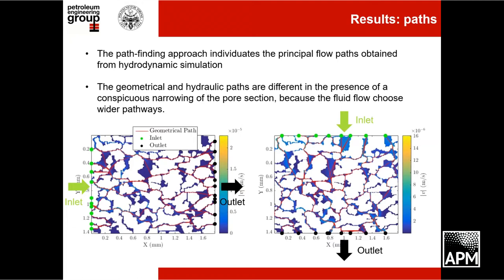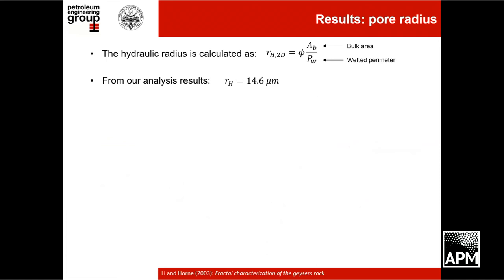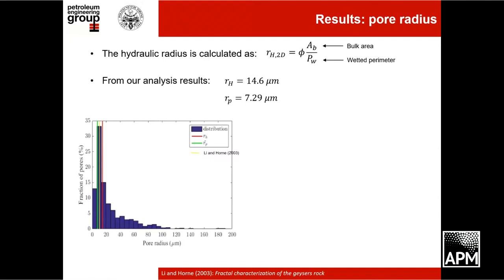The A* algorithm does not consider how narrow a pore throat is — if it is along the shortest path, it selects that direction. We calculated the hydraulic radius as the ratio between the pore area and the wetted perimeter, and compared this result with the model of the pore radius distribution. The two results are comparable, so we can say that the hydraulic radius is a good estimate of the average pore dimension.